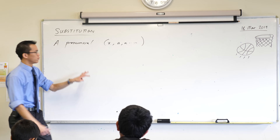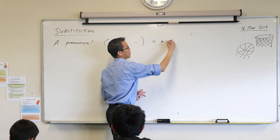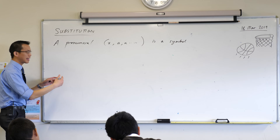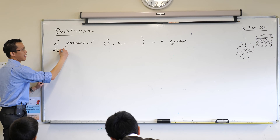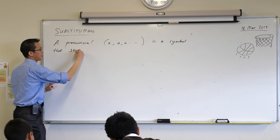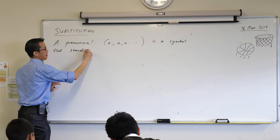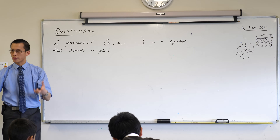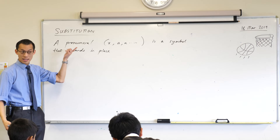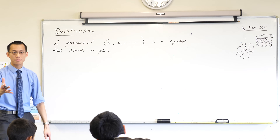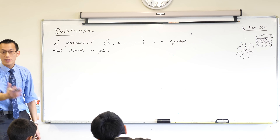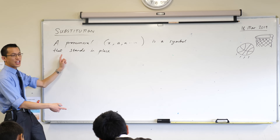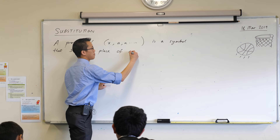A pronumeral is a symbol that stands in place of — and do you remember this is our definition? It stands in place of what? What does the symbol stand in place of? It's in the word itself. Yeah — just a number, just a numeral of any kind. So a pronumeral is just something that stands in place of a number.